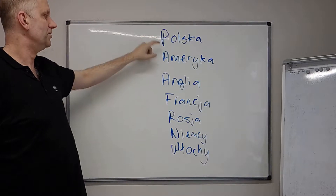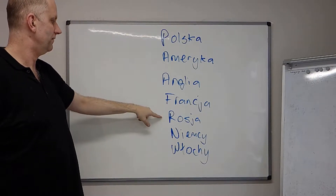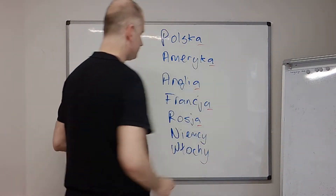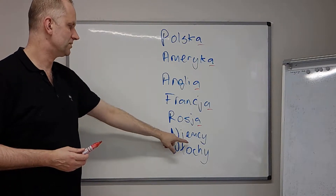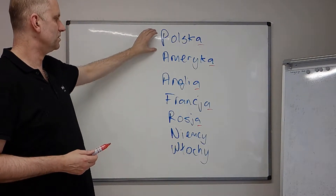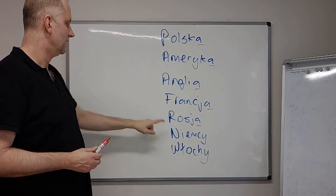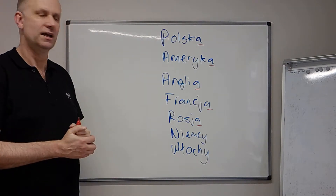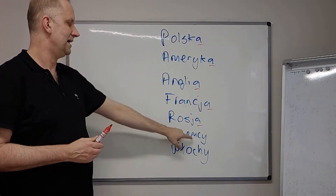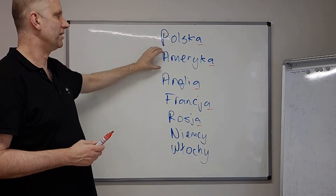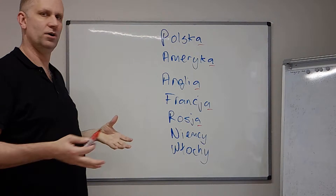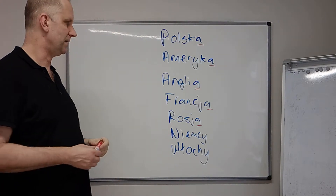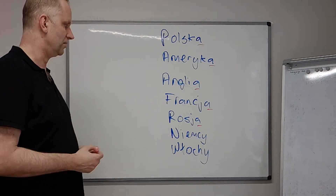So Polska — you can see that the first five end with A. Now the bottom two, Niemcy and Włochy, the first ones you'd probably be able to guess. Niemcy means Germany and Włochy means Italy. The reason they don't end in A is because Poland, America etc. are singular words, whereas the words for Germany and Italy are plural — a bit like saying the Netherlands or the Philippines, plural countries.